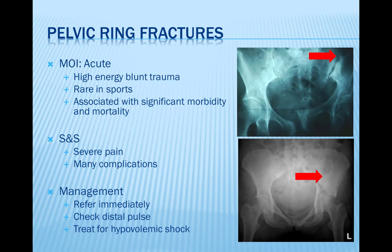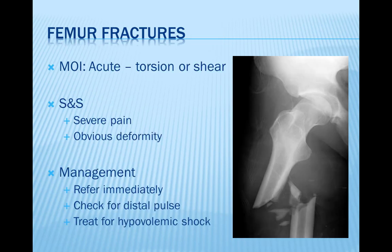Diagnosis is made on the basis of history, clinical features, and special investigations, usually including X-ray or CT scans. Because the pelvis cradles so many internal organs, a pelvic fracture may produce significant internal bleeding which is invisible to the eye. Emergency treatment consists of advanced trauma life support management. After stabilization, the pelvis may be surgically reconstructed.